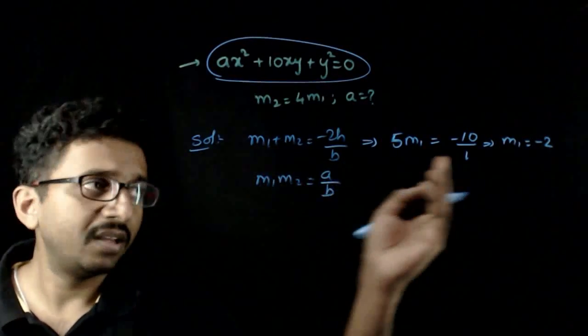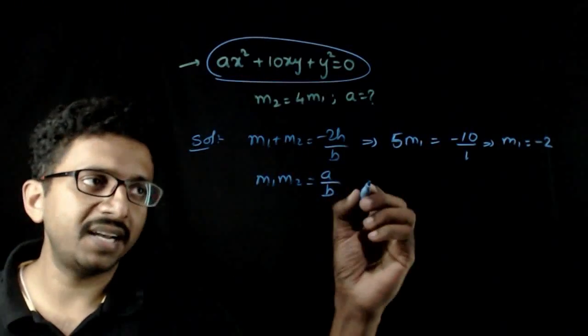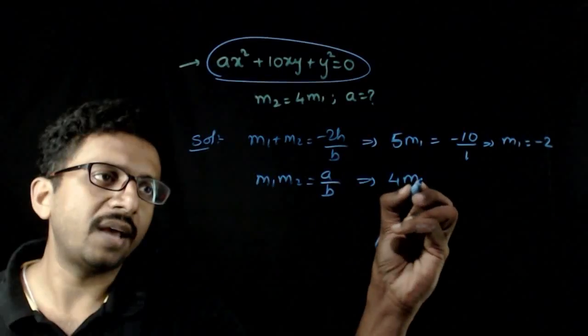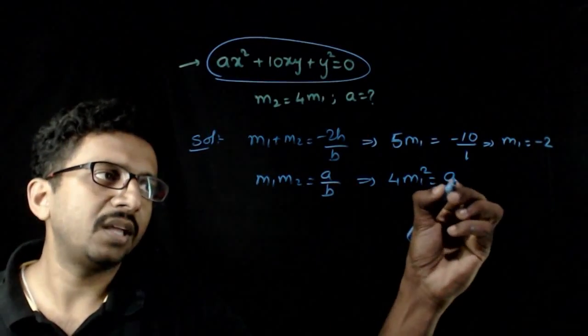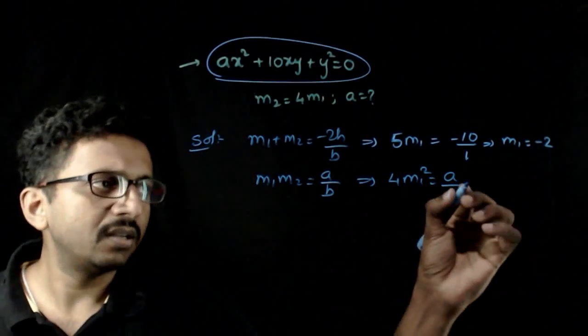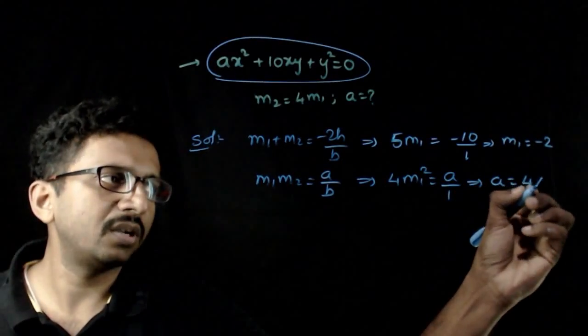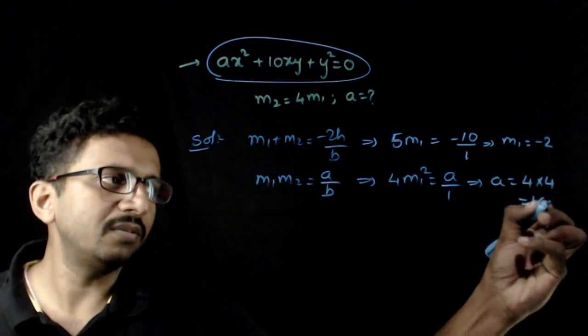Once you have m₁, substitute it in the second equation: m₁ times 4m₁, which is 4m₁², equals a/b or a/1. This implies a is equal to 4 times m₁², which is 4, so 4 times 4 equals 16.